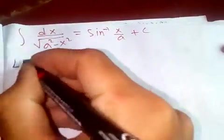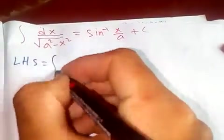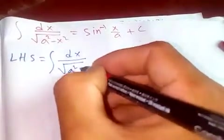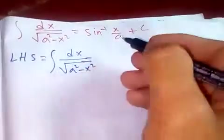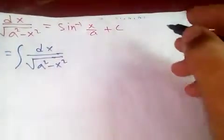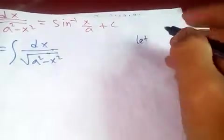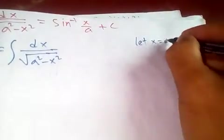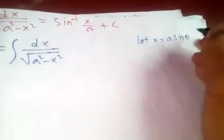So from the left-hand side, let's start: dx over square root of a squared minus x squared. Let's use our technique of integration by substitution method. Let x equal a sine theta because here we need sine inverse.